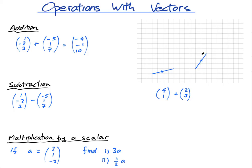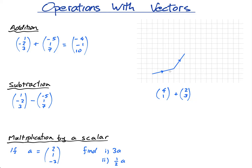Now if I add these, what this means geometrically is if I put this like so, this vector plus this vector gives me this resultant vector. And if you look, this is 1, 2, 3, 4, 5, 6 across and 1, 2, 3, 4 up. And this is 4 plus 2 is 6, 1 plus 3 is 4. Pretty straightforward.